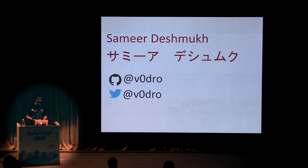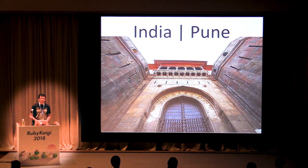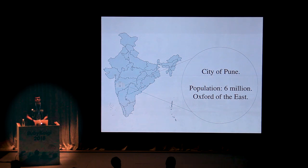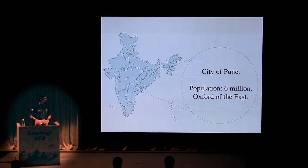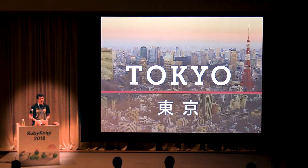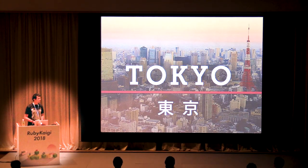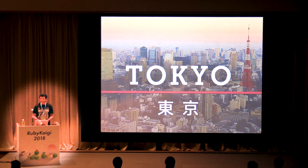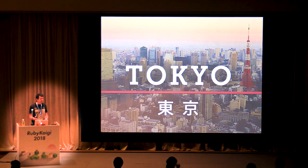My name is Sameer Deshmukh, also known as Wadro on GitHub and Twitter. I am from the city of Pune in India, a city of about 6 million people on the western coast of India. It's also known as the Oxford of the East because it has about 600 colleges within the city. Currently, I'm a master's degree student at the Tokyo Institute of Technology, studying high-performance computing. I've been living in Tokyo for the past 8 months.